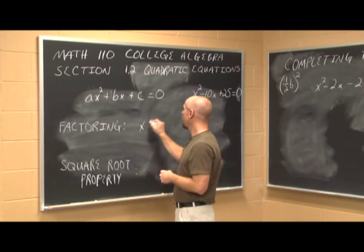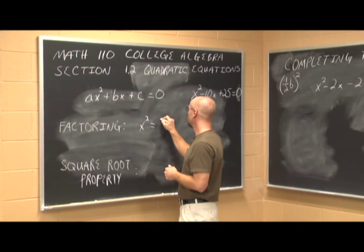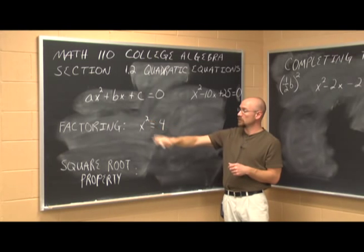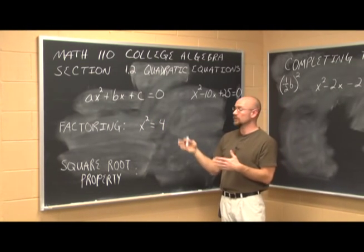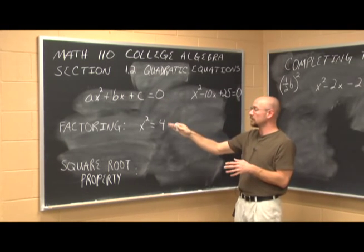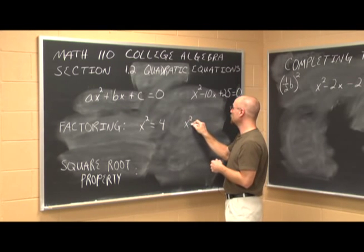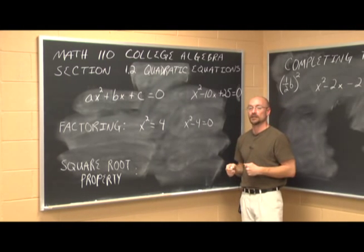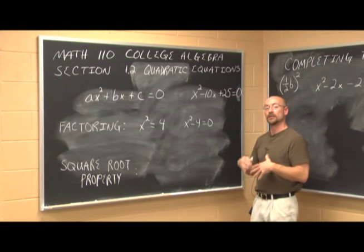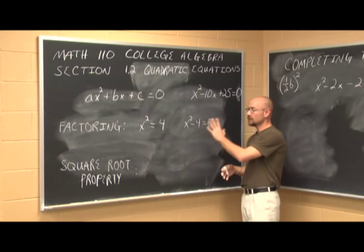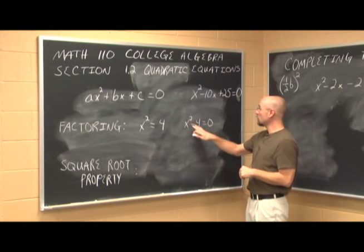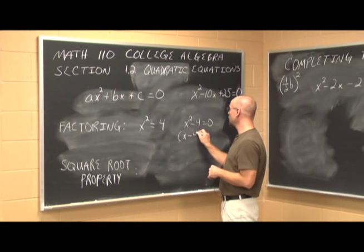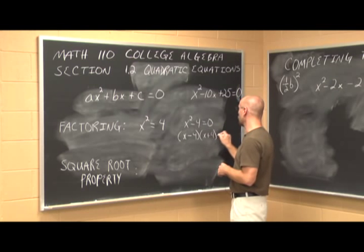Let's look at an example. If I have x squared equals 4, this equation is second degree because my variable is squared. What we can do here is factor. In order to factor, we want to put it in standard form — set it equal to 0. I can do that by subtracting 4 from both sides. I recognize this as the difference of squares, so it factors to x minus 2 times x plus 2, still equal to 0.